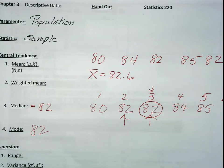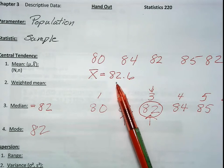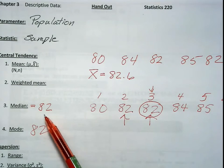If you take any statistics later on, upper level or graduate work, you can have many more modes. But right now, we're only going to deal with two. So our mean is 82.6, our median 82, and our mode is 82.